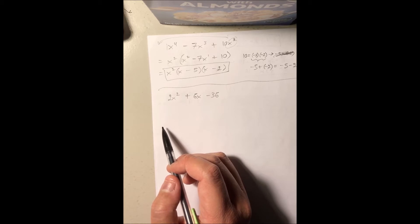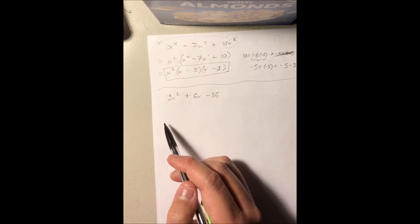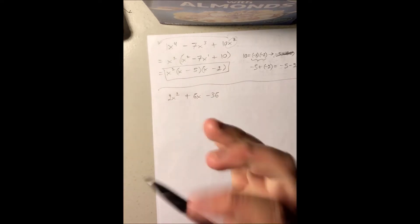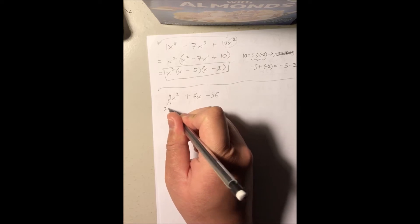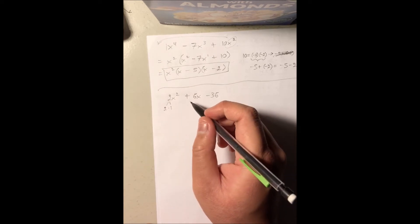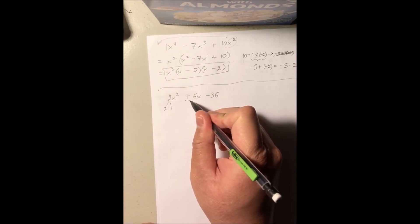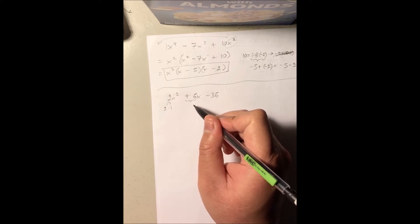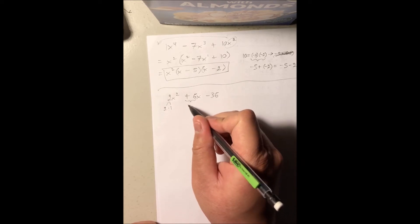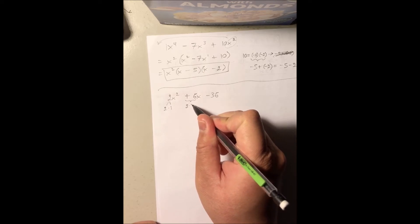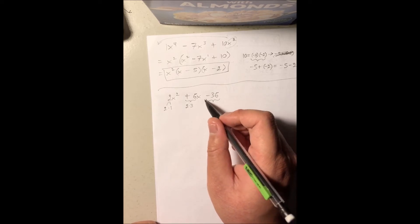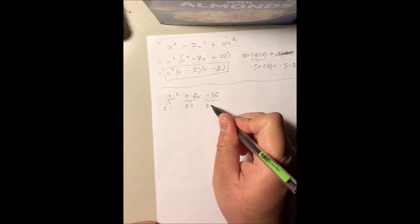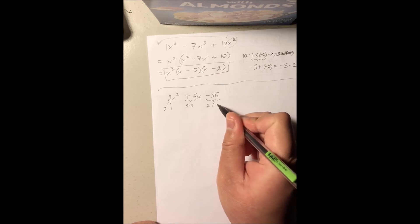Luckily, we can factor out the coefficient 2. Why? The coefficient 2 is a factor of itself - 2 times 1 gives us 2. It's also one of the multiplicative factors of positive 6, because 6 is the same as 2 times 3. Same thing for negative 36, which can be written as 2 times negative 18.